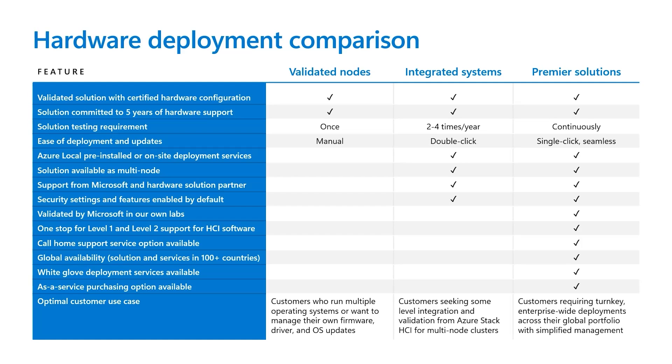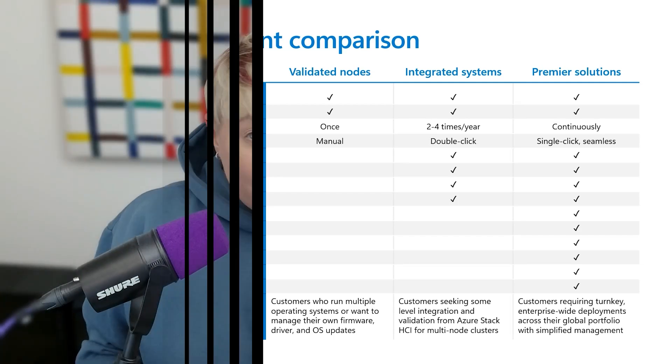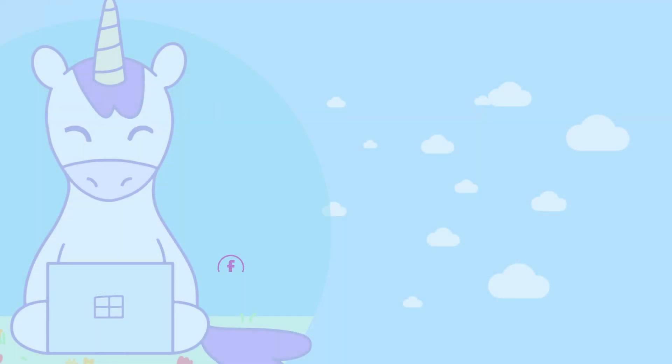It's important to pick the right solution category for your needs and budget. In simplistic terms: Validated equals DIY and customizable; Integrated equals a balance of control and support; while Premier is a turnkey, enterprise-ready solution. Folks, thank you for joining me today. Hopefully it's been useful, and if you've enjoyed this content please hit that like button and subscribe for more content — I'll see you again soon.